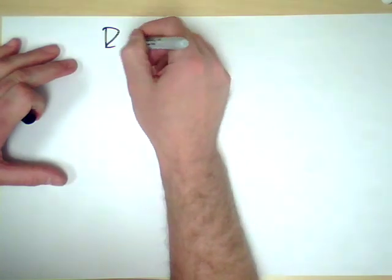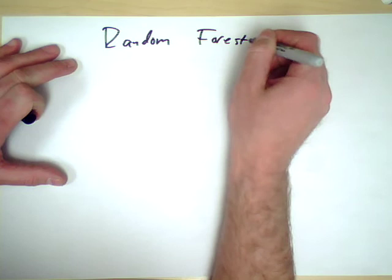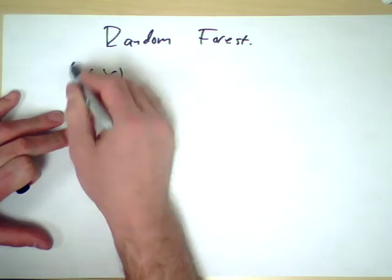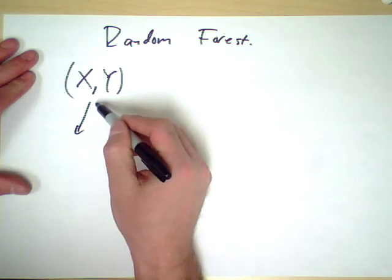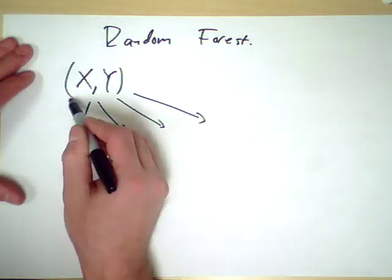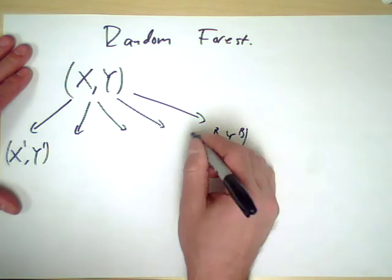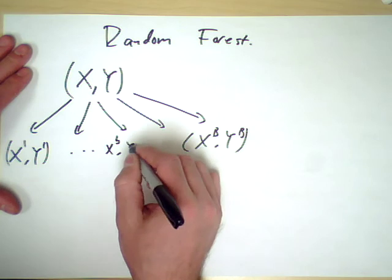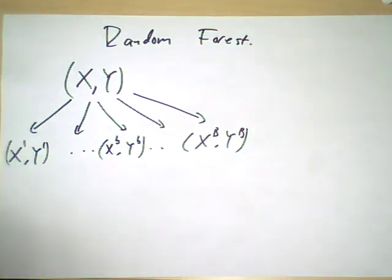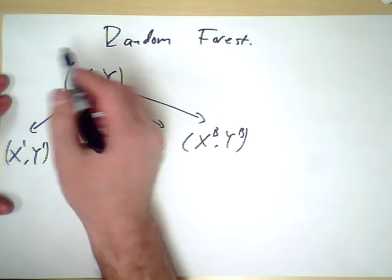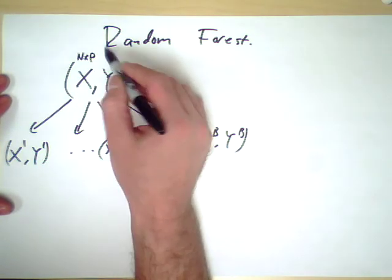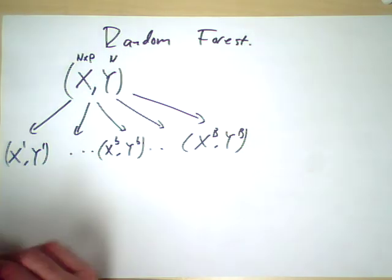A random forest is the following idea. You have your training data X Y, and what we'll do is again we will do a bootstrap procedure breaking it up into sub-samples X1 Y1 through XB YB. So we'll do this bootstrap sampling procedure. The key change happens when we build the model.